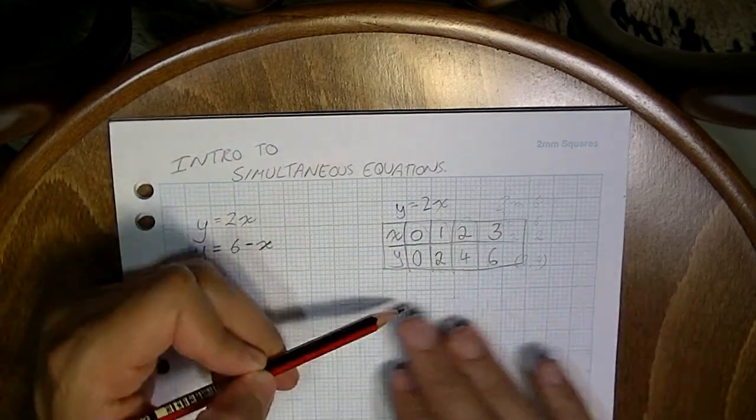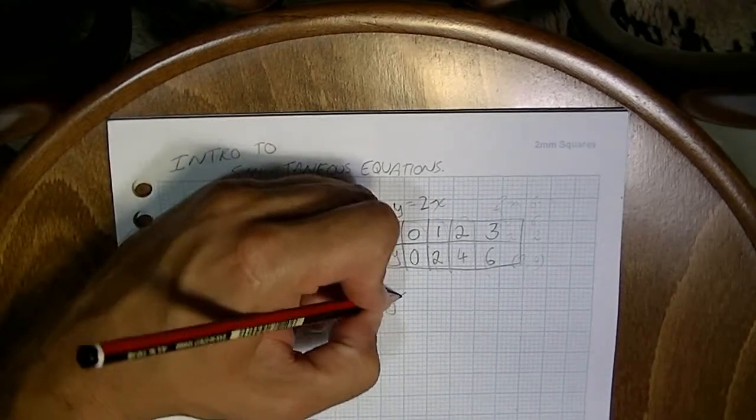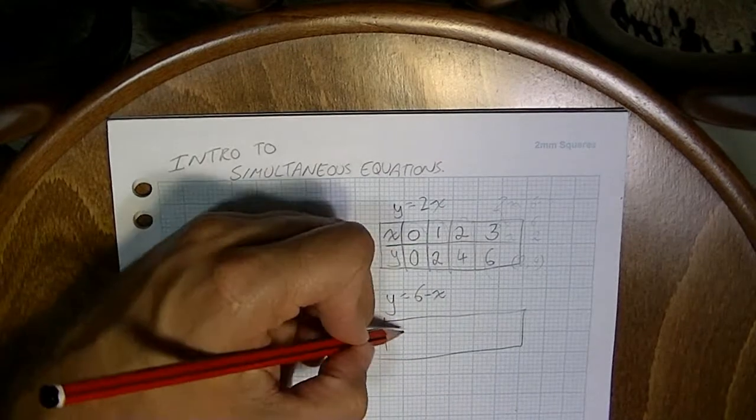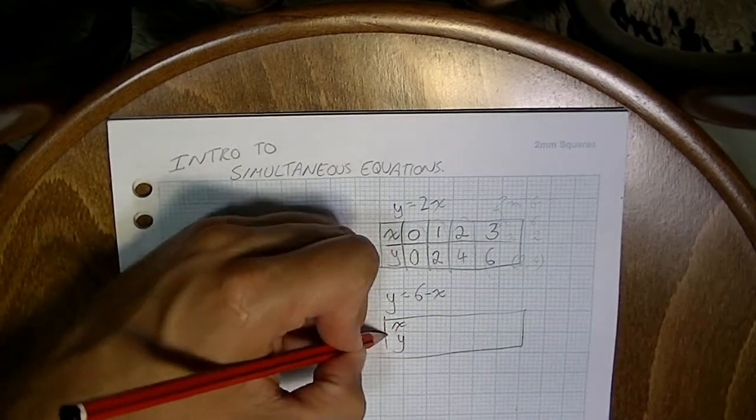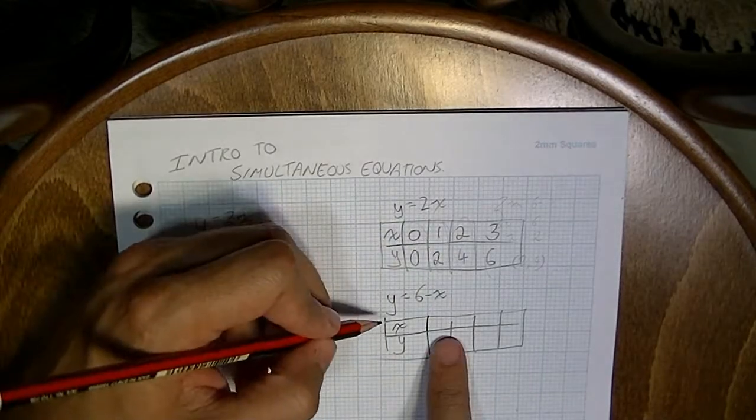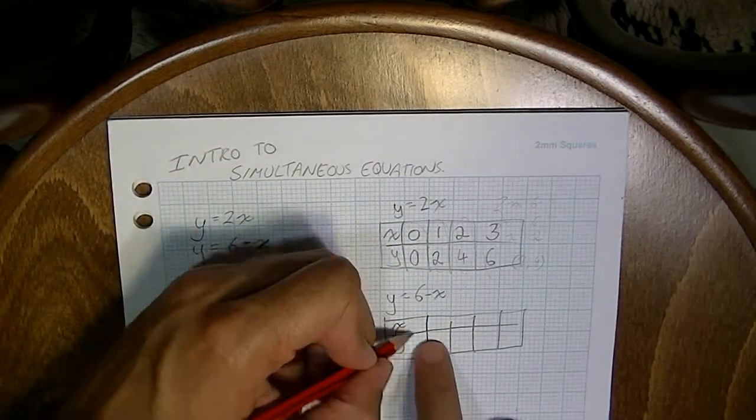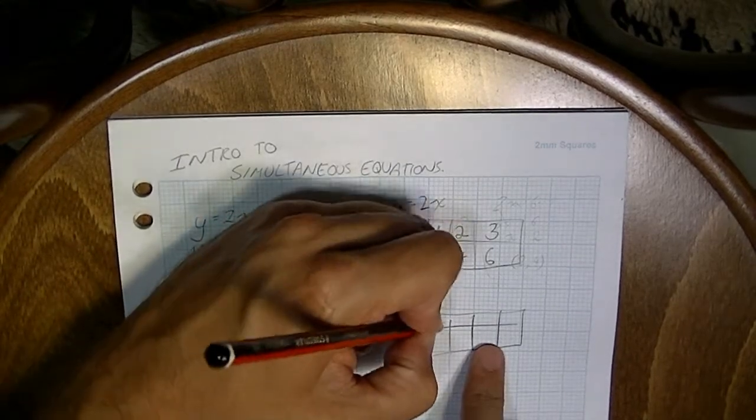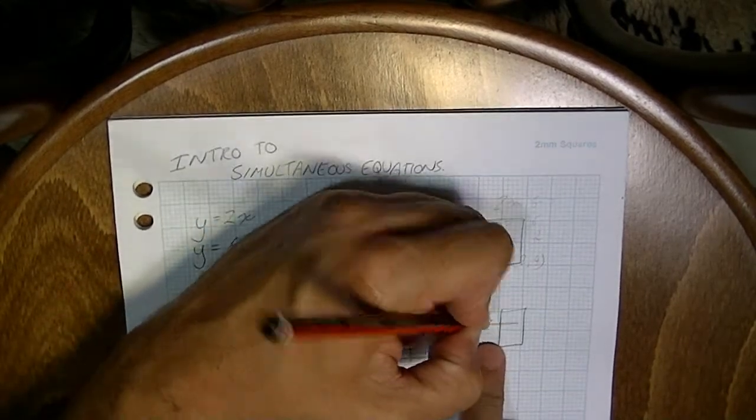Heaps and heaps of pairs of values. Now, if we do it for the other one, y equals 6 minus x, with an x and a y, and we do the same thing with this, y equals 6 minus x. Now, I'll do 0, 1, 0, 1, 2, 3.